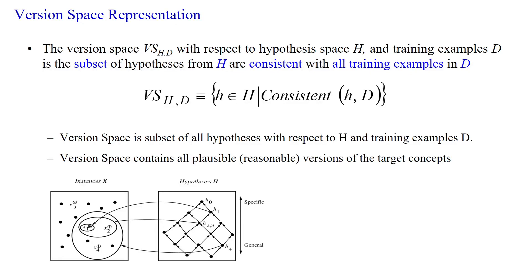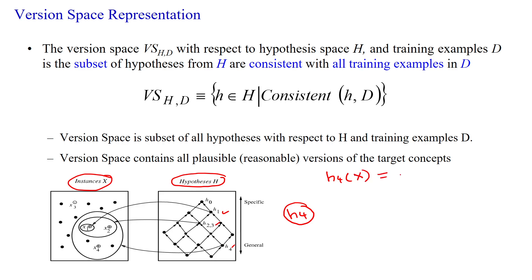Hello everyone. How to create the version space from hypothesis space. Here the instance space is given with four examples x1, x2, x3, x4, and we have derived four hypotheses h1, h2, h3, h4. We assume hypothesis h4 satisfies all training examples x1, x2, x3, x4. When a given hypothesis h4 satisfies all examples — equivalent to the target concept for all examples xi — we can say the hypothesis is consistent with respect to the given dataset D.